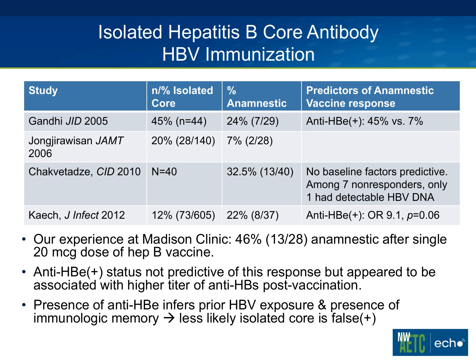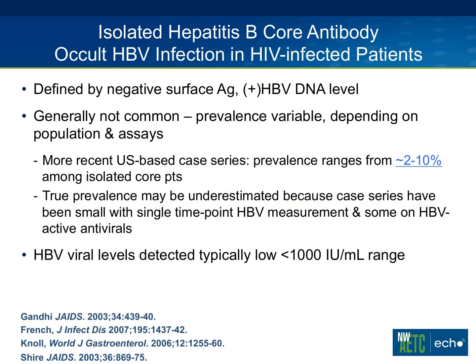We should talk about occult hepatitis B in the context of this isolated core profile. By definition, occult hepatitis B is chronic infection where the patient has lost their surface antigen but has detectable HBV DNA. Generally this is not a common scenario. The prevalence is quite variable depending on the population and assays used, but looking strictly at contemporary US-based case series, the prevalence in isolated core patients ranges from around 2 percent to as high as 10 percent.